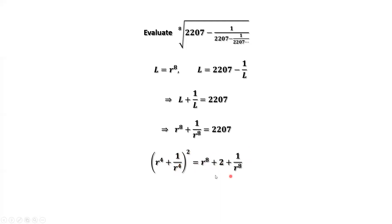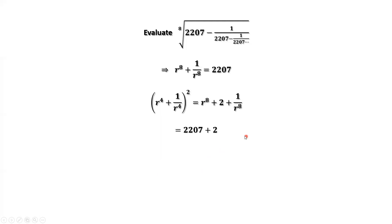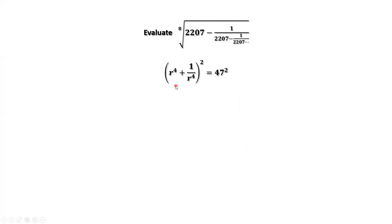Then we have this result. What is the sum of the first term and the last term? We use this result, which is 2207. 2207 plus 2 equals 2209, which is 47 squared. Therefore, r to the power of 4 plus 1 over r to the power of 4, then squared, equals 47 squared. This implies r to the power of 4 plus 1 over r to the power of 4 equals 47.